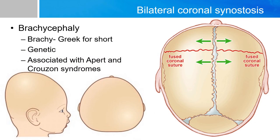When both sides of the coronal sutures are fused, this leads to compensatory growth along the sagittal suture and widening of the head, resulting in a broad and flat forehead, a flat back of the head, and a tall and wide head — hence the name brachycephaly, with brachy meaning 'short' in Greek. This synostosis is often genetic and is associated with syndromes such as Apert and Crouzon syndromes, both of which are craniofacial syndromes.